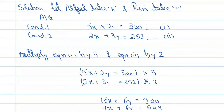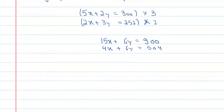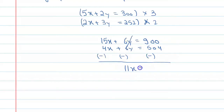Now subtract both equations. The signs change: minus, minus, minus. The 6y terms get cancelled. Here you will get 11x = 396. So from here you can say x is equal to 36.